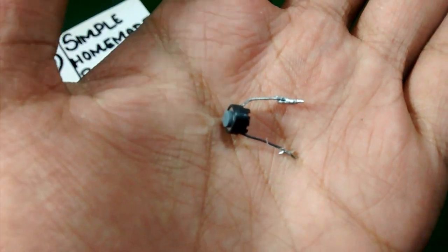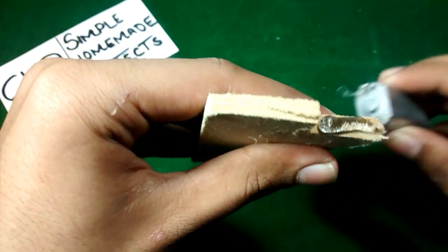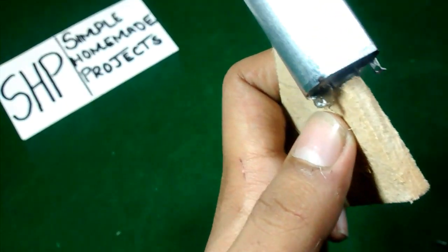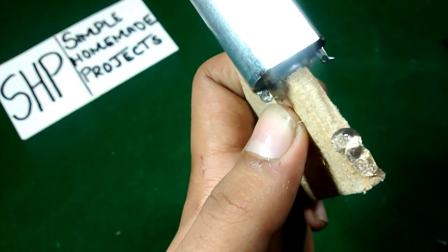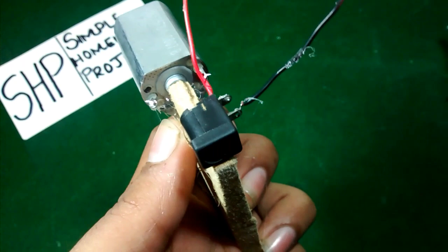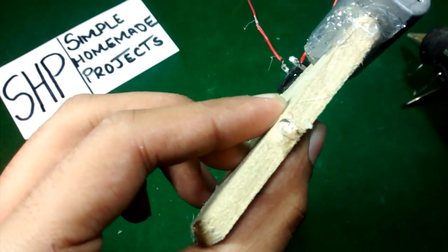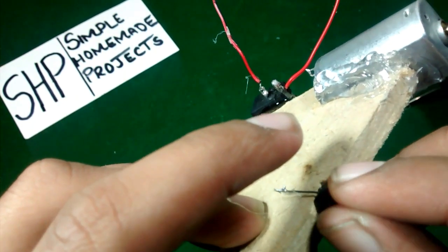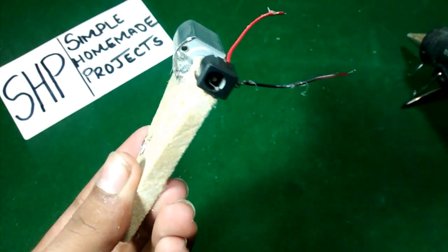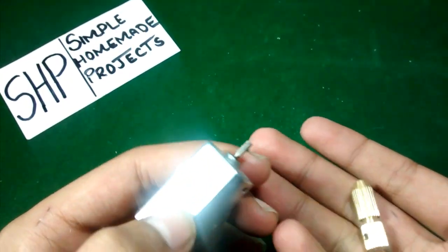First of all, I am going to glue the motor. And now friends, I am going to solder the wires. Now friends, I am going to attach the drill chuck.